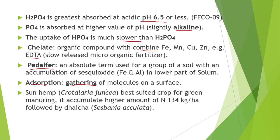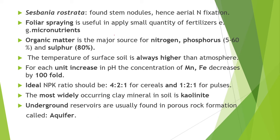Next point is sunhemp — it is the best suited crop for green manuring. It accumulates a higher amount of nitrogen, 134 kg per hectare, followed by dhaincha. Next point is, Sesbania rostrata has stem nodules, which is why it performs aerial nitrogen fixation, and it is also used as a green manure crop.